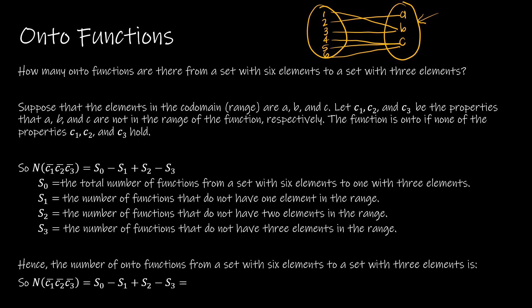Because we need A to be mapped to, we need B to be mapped to, and we need C to be mapped to. So in order for me to use this function, I'm going to make the conditions that they are not being mapped to. So C₁ is that A is not being mapped to, C₂ is that B is not being mapped to, and C₃ is that C is not being mapped to.